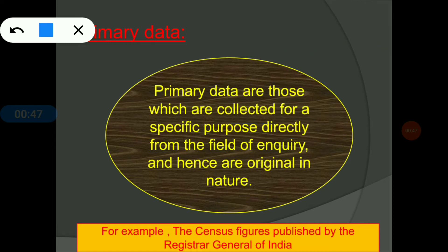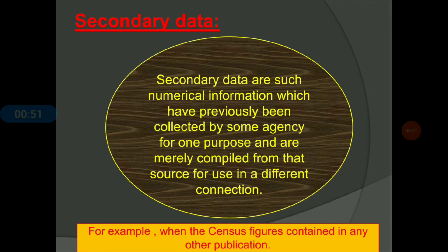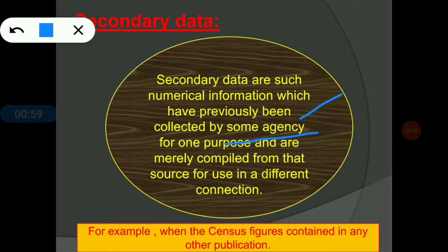Secondary data are numerical information which have previously been collected by some agency for one purpose and are merely compiled from that source for use in a different connection. That means data collected by a government organization for their study can later be taken by private organizations, institutions, or schools and colleges for their own study from a different perspective. That data is known as secondary data. For example, when census figures are contained in other publications, that is secondary data.